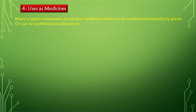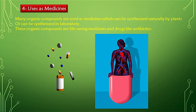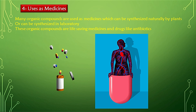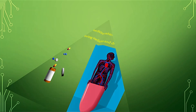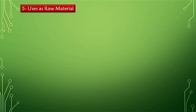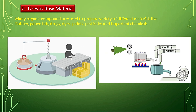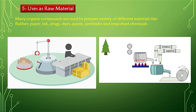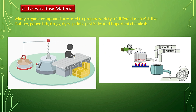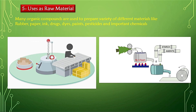Organic compounds can be used as medicines. Many organic compounds used as medicines can be synthesized naturally by plants or in the laboratory. These are sometimes life-saving medicines or drugs like antibiotics. Organic compounds can also be used as raw materials to prepare a variety of different products like rubber, paper, ink, dyes, paints, pesticides, and important chemicals. Since raw materials are the input of any industry, organic compounds are used to prepare many useful products.